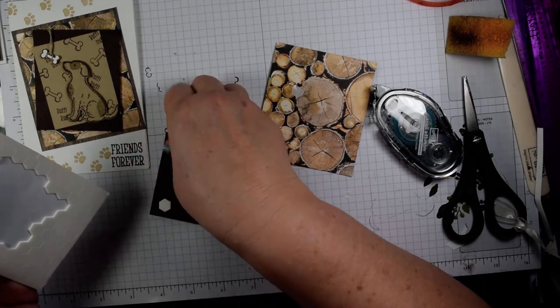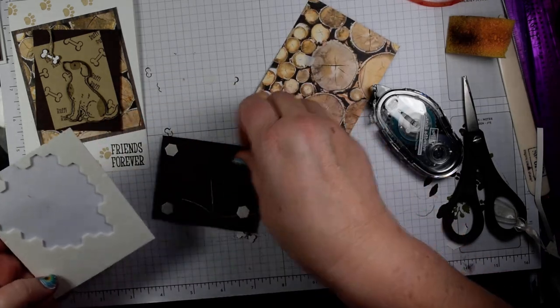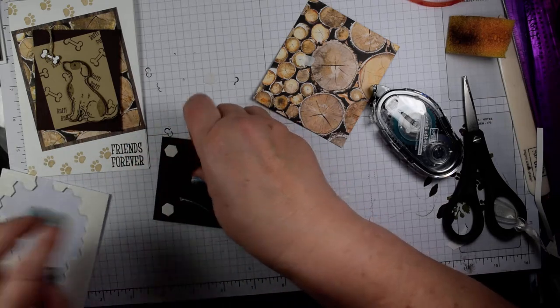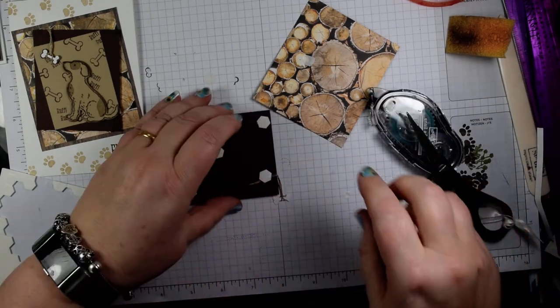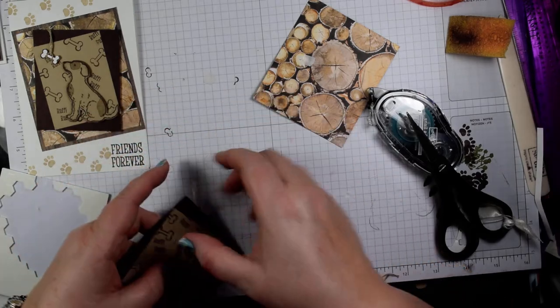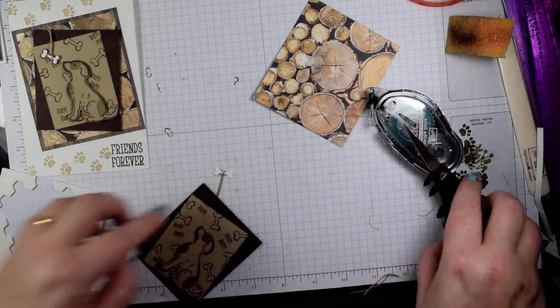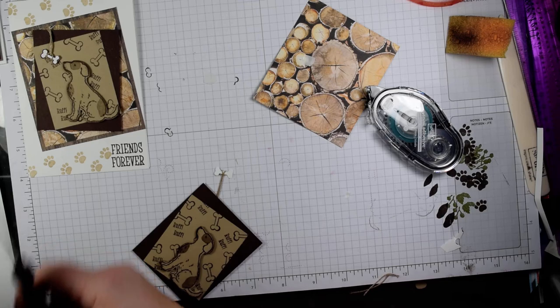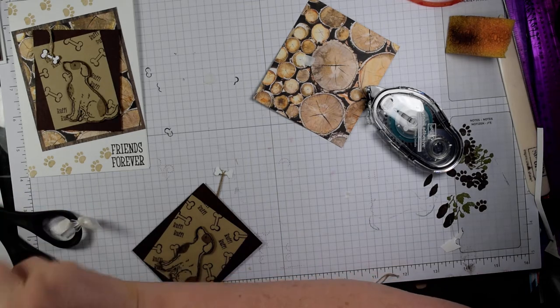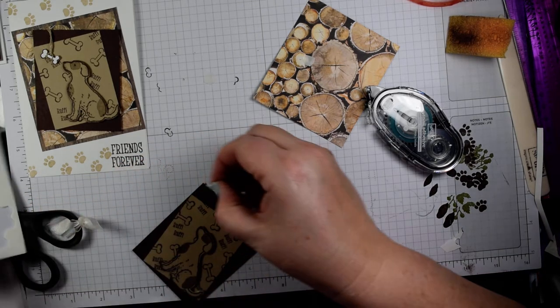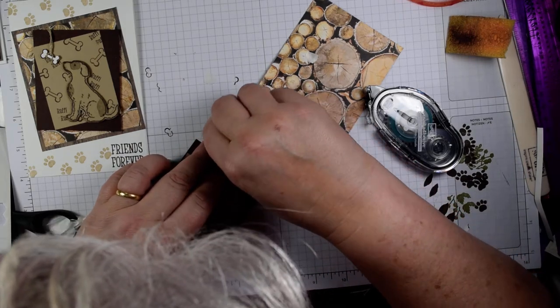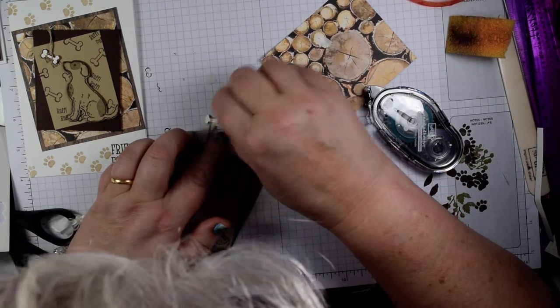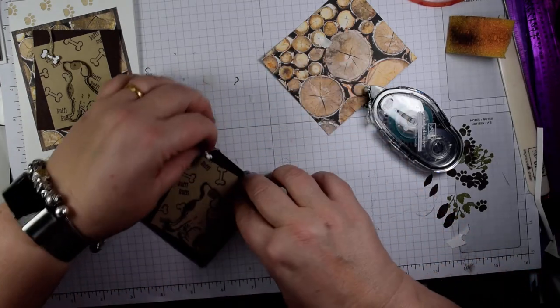One in each corner, one in the middle is my usual mantra for dimensionals. Trim off any excess, you don't want that poking out. I would put just a small piece of dimensional on the back of that bone as well, just to hold it down. So just on the one end, like so.